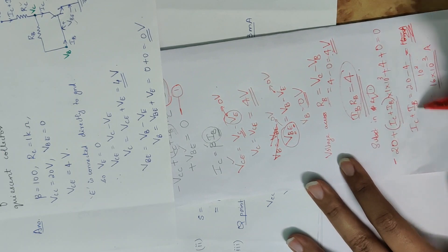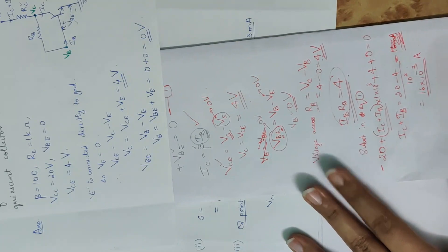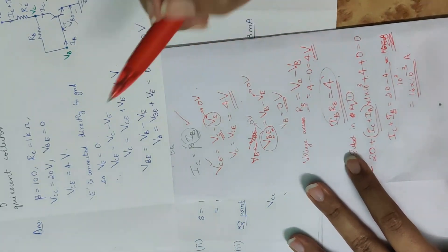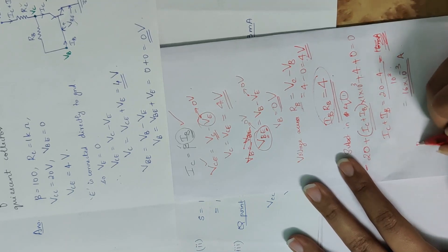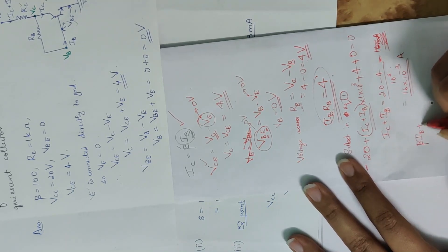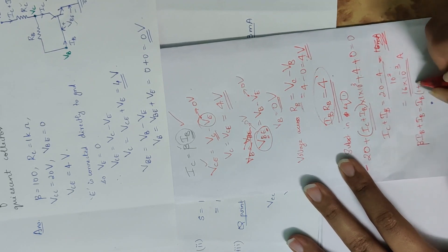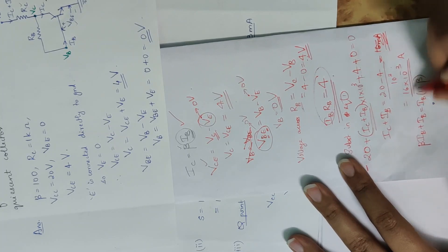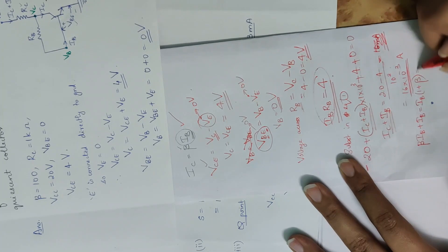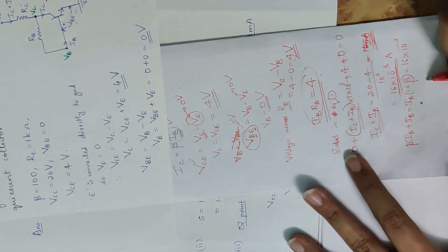Now IC equals beta times IB. Beta is 100. So substituting IC: beta×IB plus IB equals (1 plus beta) times IB. IB common gives (1 plus beta) times IB equals 16 into 10 to the minus 3. With beta equal to 100, we get 101 times IB equals 16mA.